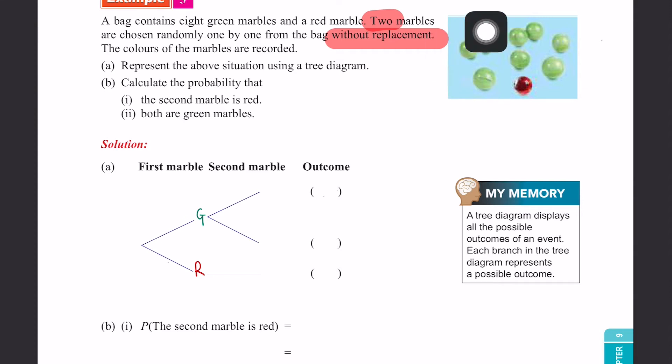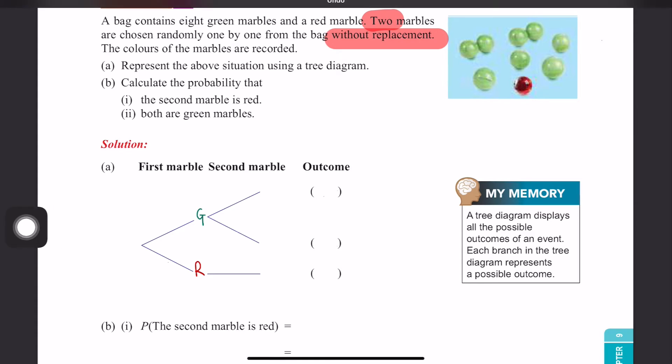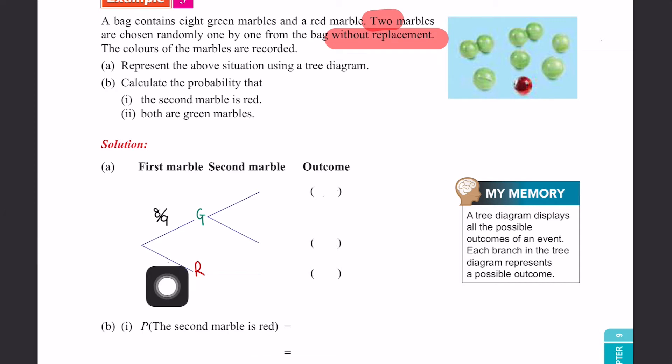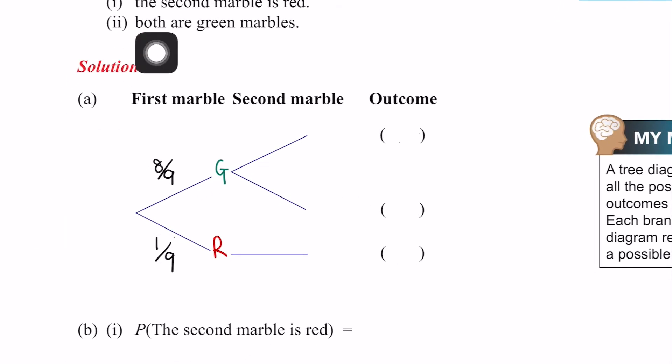So 8 green marbles out of how many marbles? 9. And then what is the probability of getting a red marble? How many red marbles? 1 red marble. Out of how many marbles? 9 marbles. So this is the first marble.